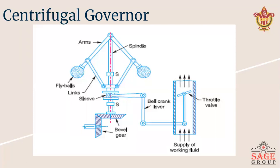These balls are also known as governor balls. The balls revolve with a spindle which is driven by the engine through bevel gears. The upper ends of the arms are pivoted to the spindle so that the balls may rise up or fall down as they revolve about the vertical axis. The arms are connected by links to the sleeve which is keyed to the spindle. This sleeve revolves with the spindle but can slide up and down. The balls and the sleeve rise when the spindle speed increases and fall when the speed decreases.